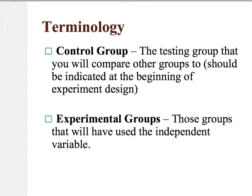Your control group is the testing group that you will compare the other groups to, and it should be identified at the beginning of the experiment. It either does not receive your independent variable or it is as close to real life as possible. Your experimental groups are those where you did apply the independent variable.